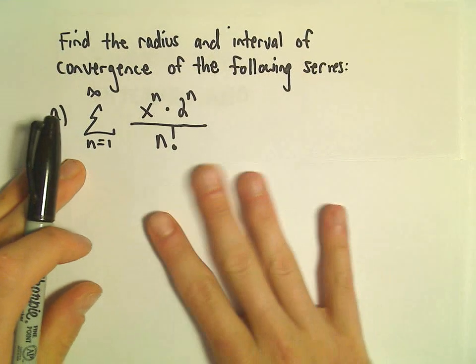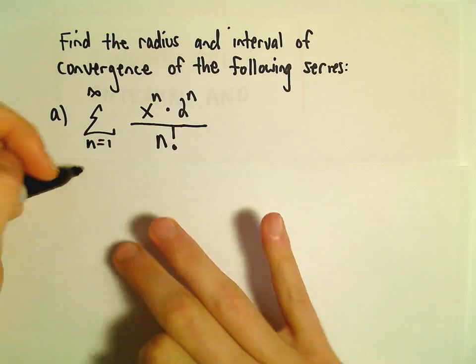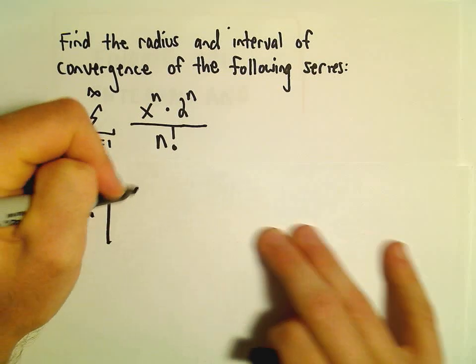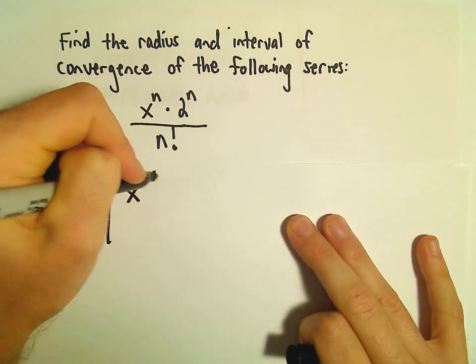To do these, we're going to use the ratio test. We'll take the limit as n goes to infinity. Everywhere there's an n, I'm going to replace it with n plus 1.